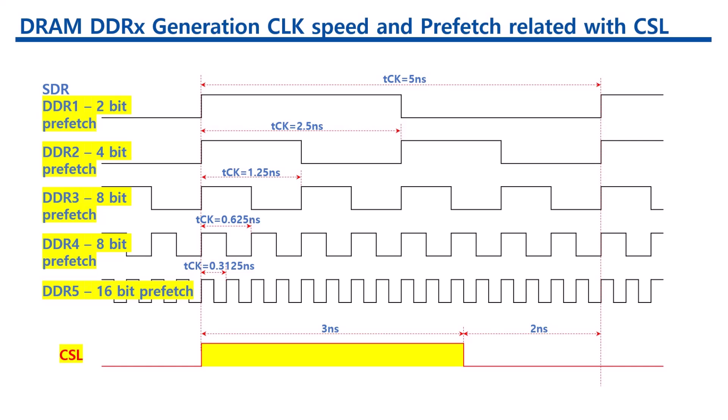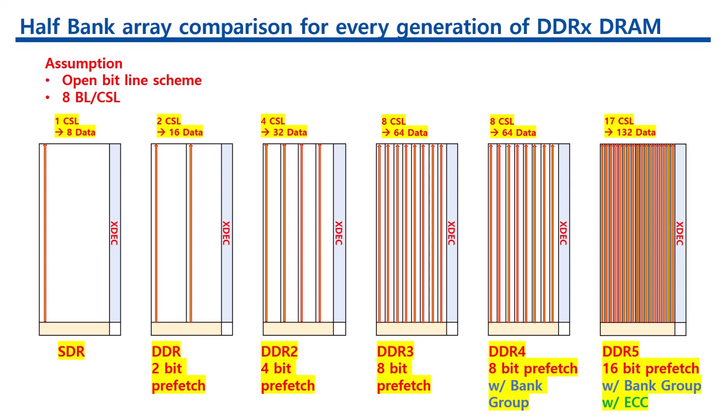Since the core speed of the DRAM does not change significantly from generation to generation, the prefetch has increased with every DDR generation to offer increased speed at the SDRAM interface. However, continuing the trend with DDR4 would have required DDR4 to adopt a prefetch of 16. This change would make the DRAMs much larger because of all the wires that have to be included, making them too expensive, so designers saved cost by not going to a prefetch of 16.